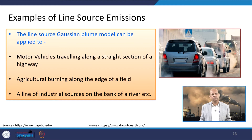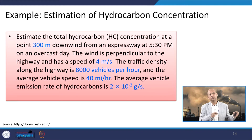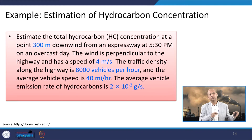Examples of the line source Gaussian model include motor vehicle movement on highways, agricultural burning along the edge of a field, and a line of industrial sources on the bank of a river or stream. Using these assumptions, we can calculate concentrations using the derived equation.